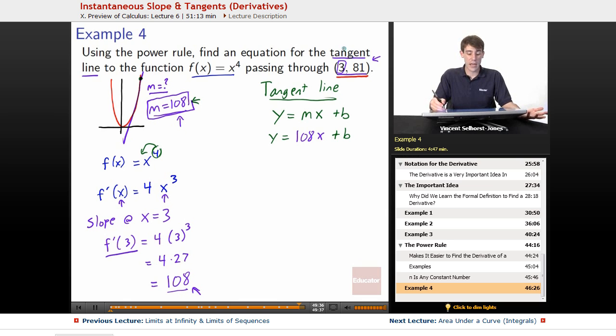y equals 108x plus b. Well, do we know any points on that line? Yeah. We're looking at the tangent line, and we were told that the tangent line passes through the point 3 comma 81.